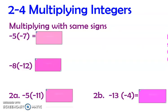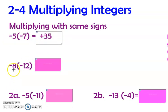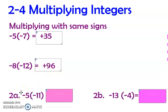Multiplying with the same signs — with the same sign we're going to get a positive answer. If you had 5 times 7, both positives, you get positive 35. The same thing happens with negatives: negative 8 times negative 12 gives us positive 96 — two negatives, so it's positive 96. Pause right now and do 2a and 2b; these are all like example number two.